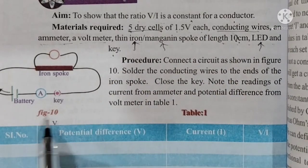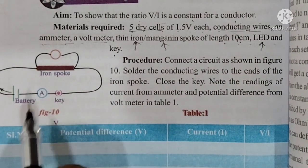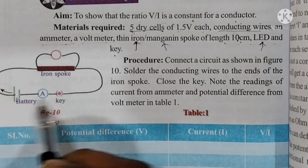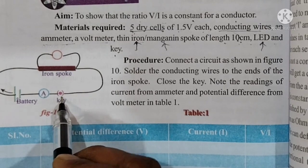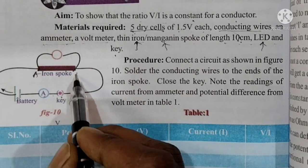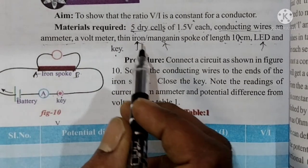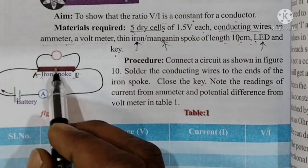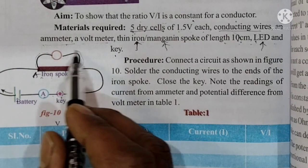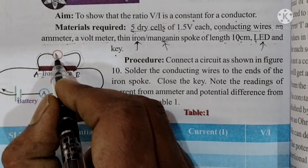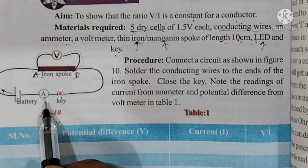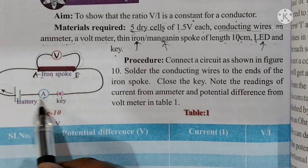We can connect the battery — 5 cells — along with the ammeter and key. The voltmeter is connected in parallel. V represents voltmeter; A represents ammeter. Voltmeter measures voltage and ammeter measures current. This is the simple circuit.